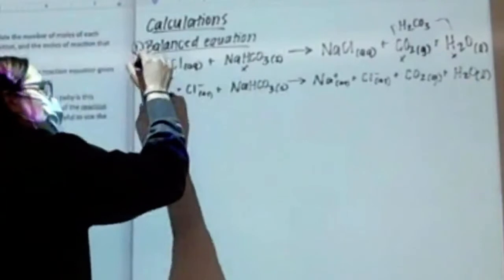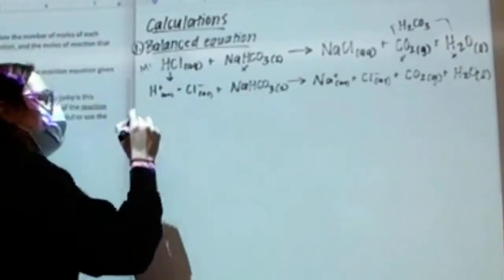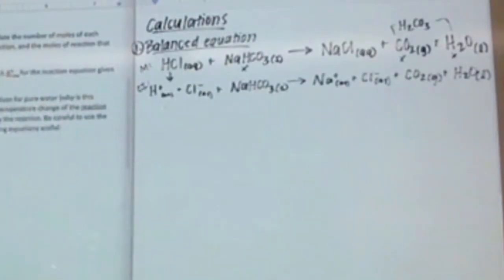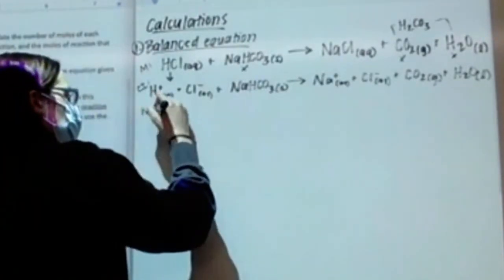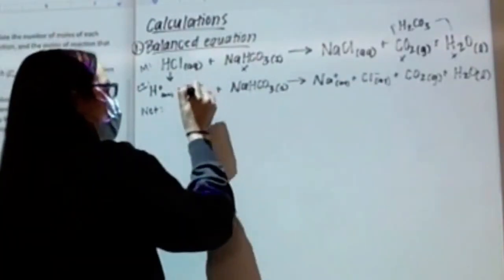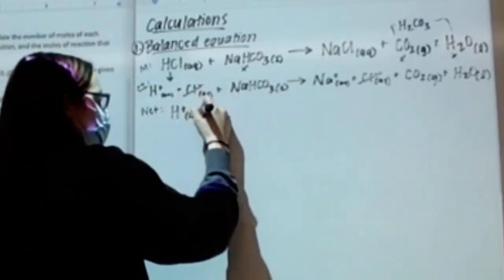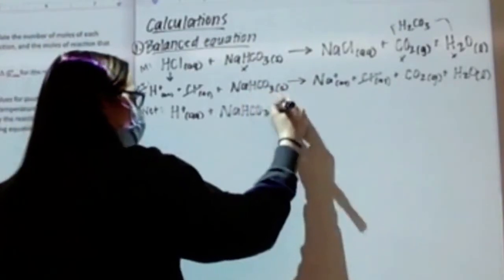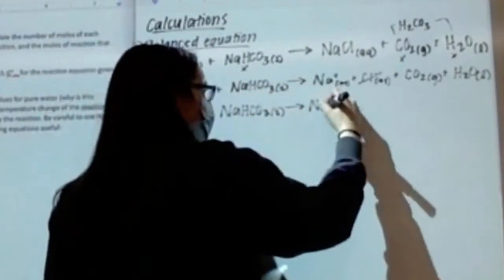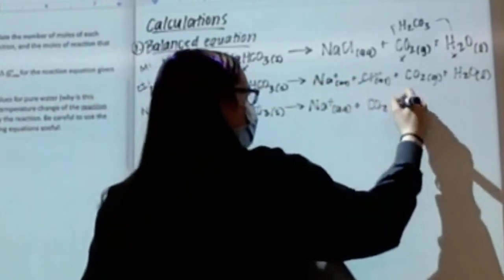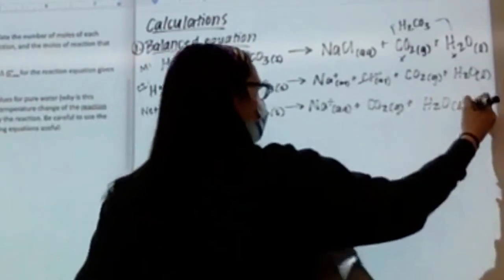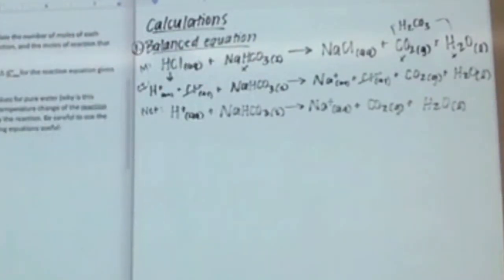So what we have here, if we label each of these: this is the molecular equation, this is the complete ionic equation. To write the net ionic equation, I cancel out spectator ions. The only spectator ion here is Cl-. So the net ionic equation is: H+ (aq) + NaHCO3 (s) → Na+ (aq) + CO2 (g) + H2O (l). There's our balanced equation — molecular, complete ionic, and net ionic.